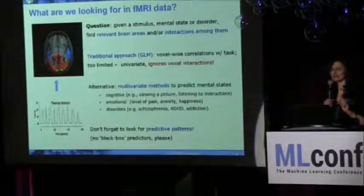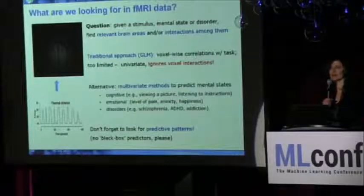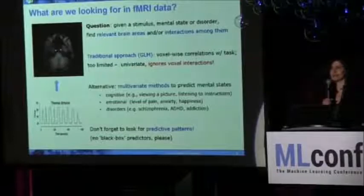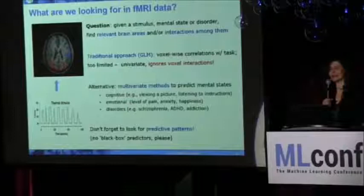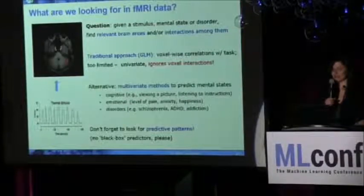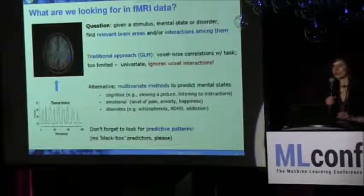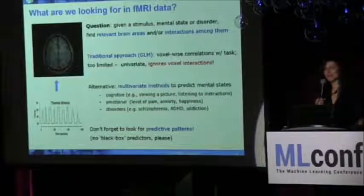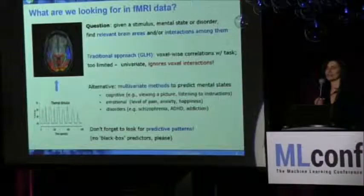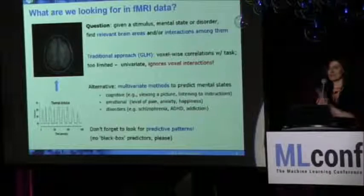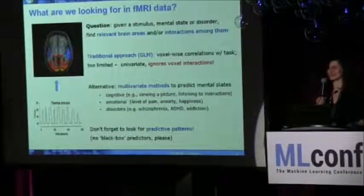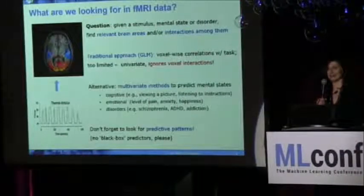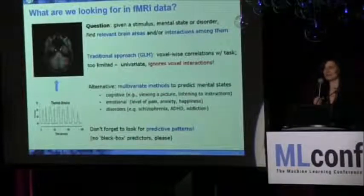This type of question is universal in fMRI studies, and that's pretty much where the field started even before machine learning people came in. Given a stimulus, mental state, or mental disorder like schizophrenia, ADHD, or autism, can you find relevant brain areas? Can you find interactions or networks across those areas? Traditional neuroimaging approaches were quite simplistic — they used univariate voxel correlations with a task or stimulus, and correlations above threshold would be plotted on a nice colorful map.